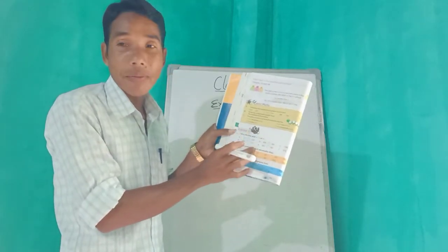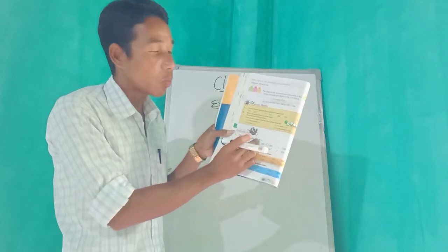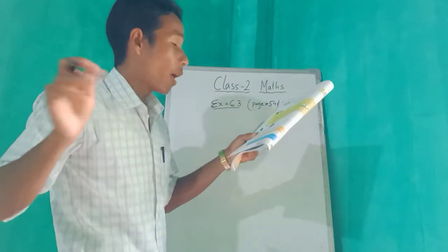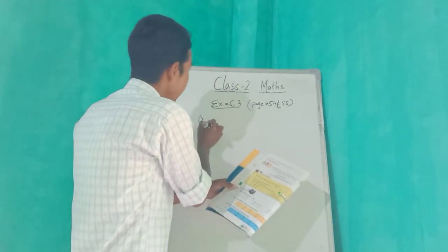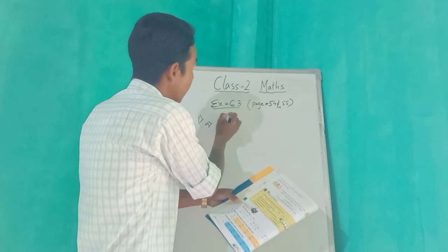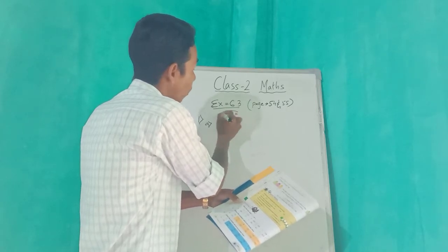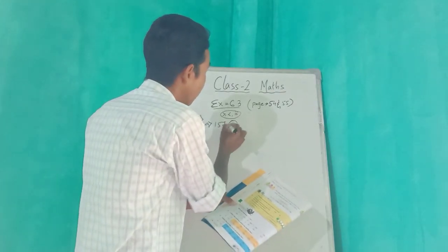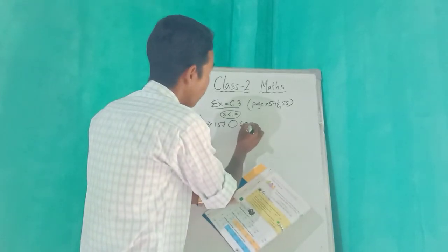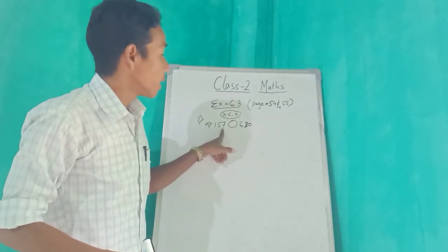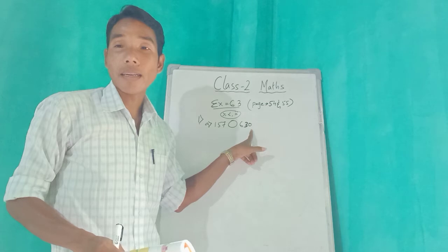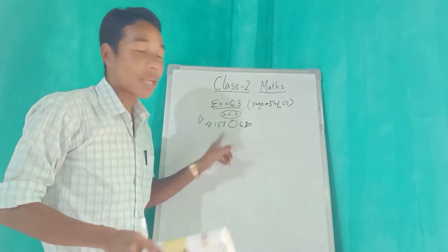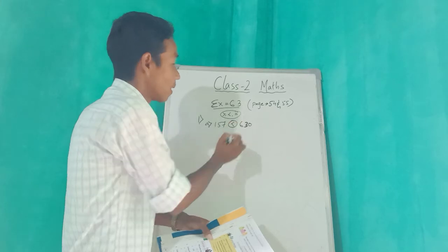Two numbers are given, so by looking at the numbers we have to write which is greater, which is smaller, or equal. See number 1a. This sign is greater than, this is smaller than, and this is equal. So number a: 157 and 630. Which one is greater? Say everyone — lovely, yes! 630 is greater than 157.